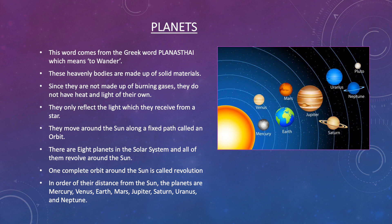These heavenly bodies are made up of solid materials. Since they are not made up of burning gases, they do not have heat and light of their own. They only reflect the light which they receive from a star. They move around the Sun along a fixed path called an orbit. There are 8 planets in the solar system and all of them revolve around the Sun. One complete orbit around the Sun is called a revolution. In order of their distance from the Sun, the planets are Mercury, Venus, Earth, Mars, Jupiter, Saturn, Uranus and Neptune.